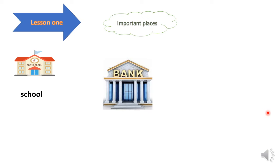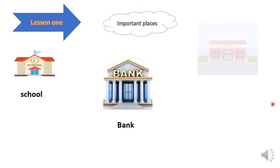The second place is bank. The bank is a place we go to take money or give money — deposit money or withdraw money. This is a bank, and this is the way we write the word 'bank': B-A-N-K, bank.